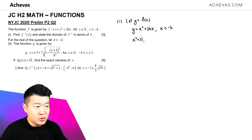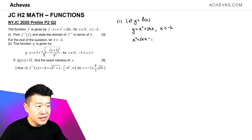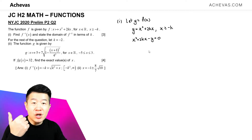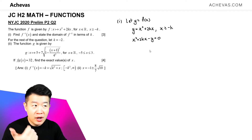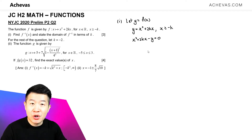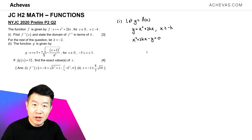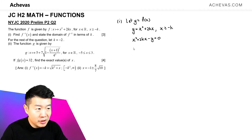So x squared plus 2kx — I'm going to bring y over to this side, so this is equal to 0. We can either complete the square or we can make use of the completed square result, which is the quadratic formula, to make x the subject.